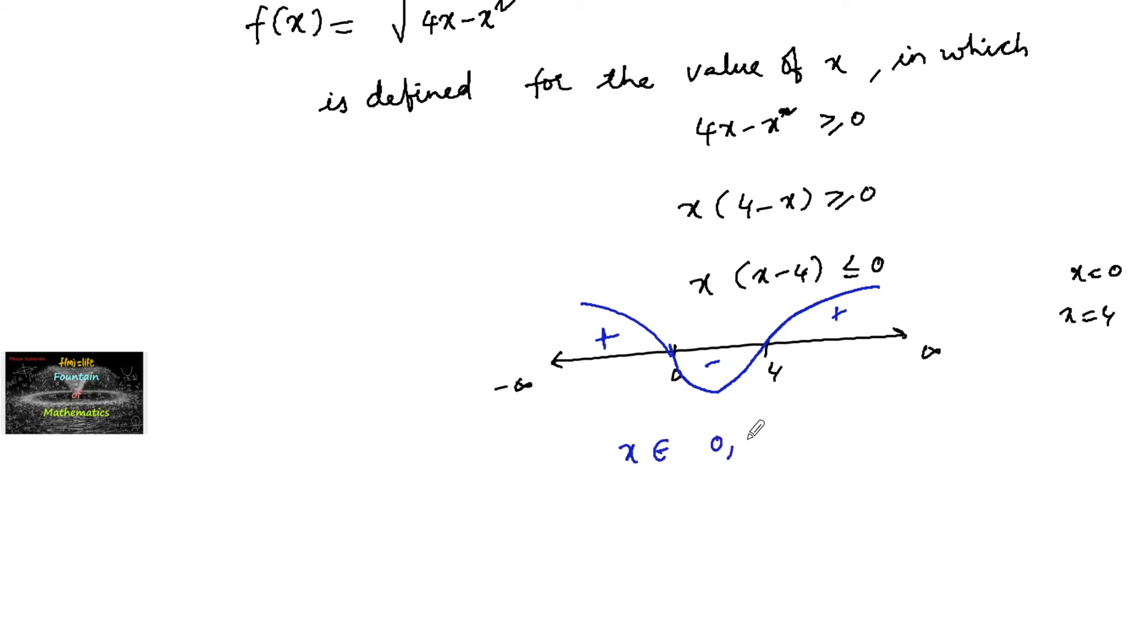We can say x ∈ [0, 4], with both x = 0 and x = 4 included. So x ∈ [0, 4] is the domain of the given function. The wavy curve method is explained in the link given in the description box.